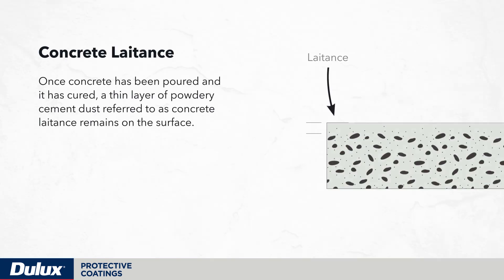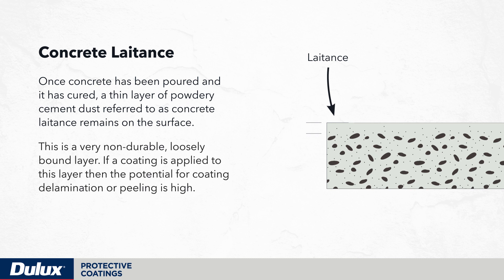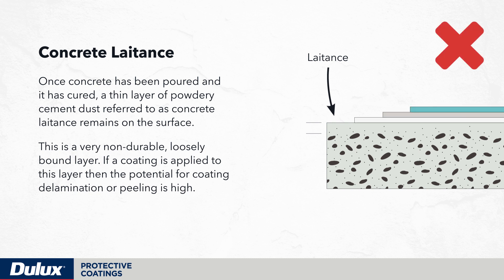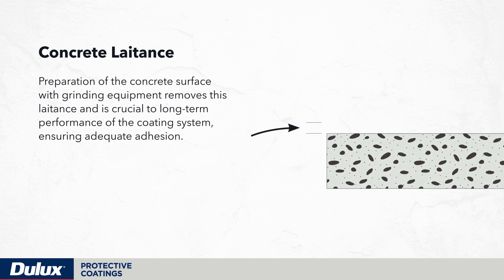Once concrete has been poured and has cured, a thin layer of powdery cement dust referred to as concrete latence remains on the surface. This is a very non-durable, loosely bound layer. If a coating is applied to this layer then the potential for coating delamination or peeling is high. Preparation of the concrete surface with grinding equipment removes this latence and is crucial to long-term performance of the coating system, ensuring adequate adhesion.